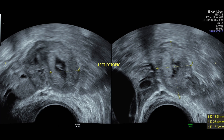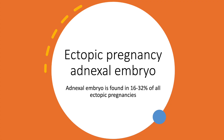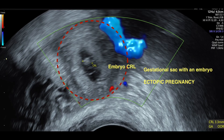This is another picture showing an ectopic pregnancy with an embryo. On the left side, presence of an embryo in the adnexal region is found in 16-32% of all ectopic pregnancies, as shown in this picture. CRL is the length of the baby that is being measured.